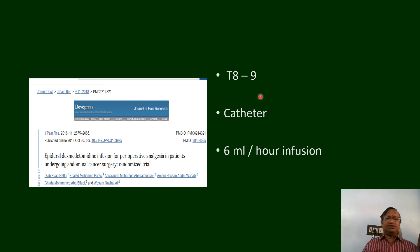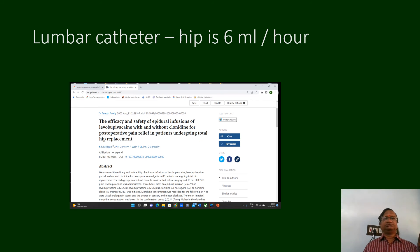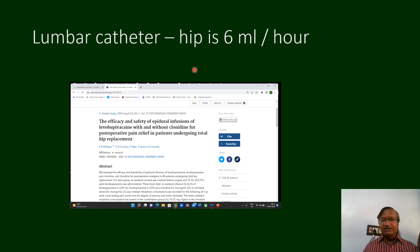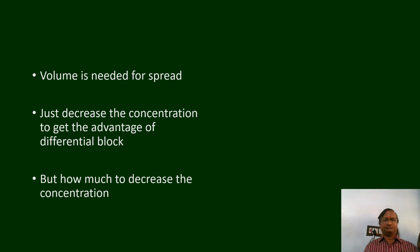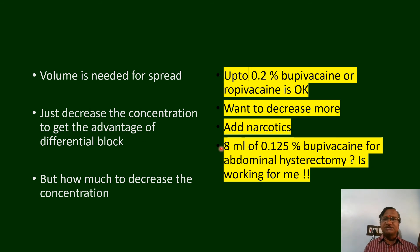For epidural dexmedetomidine in abdominal cancer surgery: with a T6 catheter, 6 ml is enough; with an L4 catheter, 9 to 10 ml is needed. Lumbar catheter for hip surgery: 6 ml per hour. Lumbar catheter for abdominal surgery: 9 to 10 ml per hour. Volume is needed for the spread; decrease concentration and use the advantage of differential block.